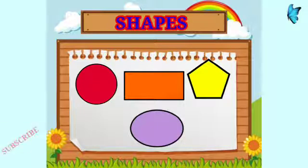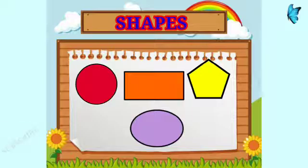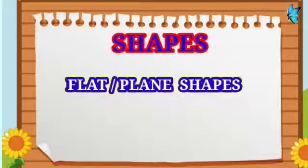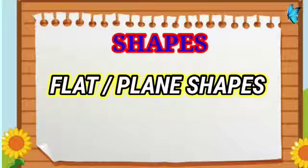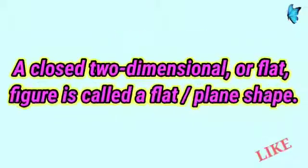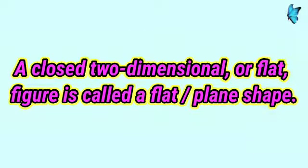Hello children, today in this video we are going to talk about shapes. Shapes are of two types: flat or plane shapes and solid shapes. Let's talk about flat or plane shapes. A closed two-dimensional or flat figure is called a flat shape.